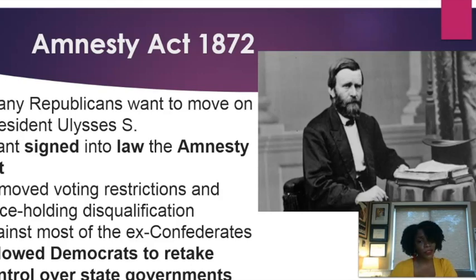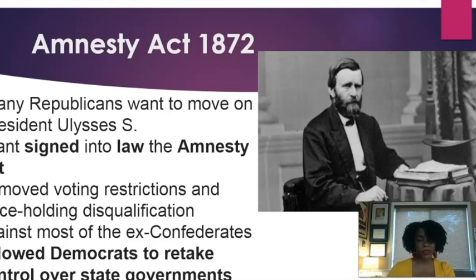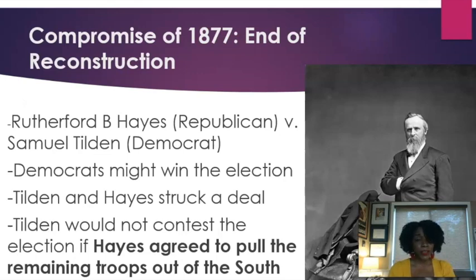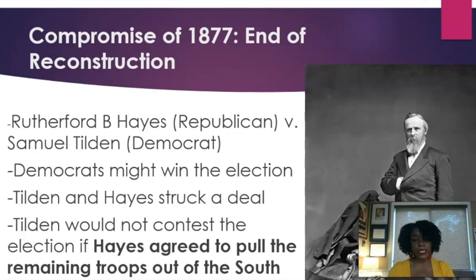However, by 1872, a lot of Republicans just wanted to move on, and President Ulysses S. Grant signed into law the Amnesty Act. The Amnesty Act of 1872 removed voting restrictions and office-holding disqualifications against most ex-Confederates, so Democrats were able to retake control over state governments. Perhaps the final nail in the coffin of Reconstruction was the Compromise of 1877. Rutherford B. Hayes, a Republican, was running against Samuel Tilden, a Democrat. Because of the Amnesty Act, the election was looking very close. Tilden and Hayes struck a deal — Tilden would not contest the election if Hayes agreed to pull the remaining troops out of the South.